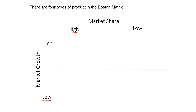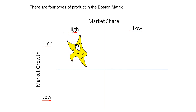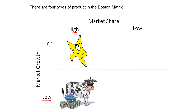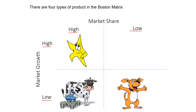We have four labels to describe our products. If a product has high market share and high market growth, we call it a star. If it has high market share but the market has slowed in growth, we call it a cash cow. If a product has low market share in a low growth market, we call these dogs. And if it has a low market share in a high growth market, we call these problem children.